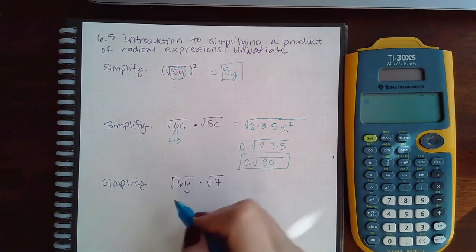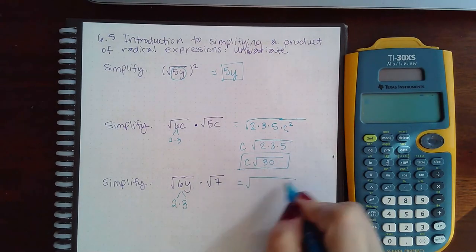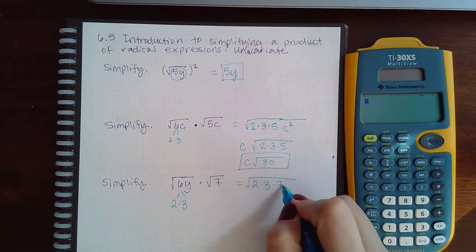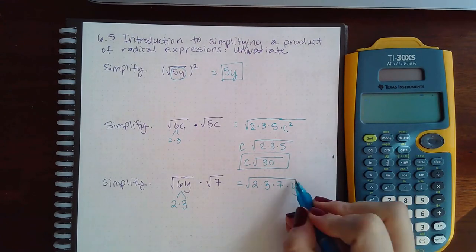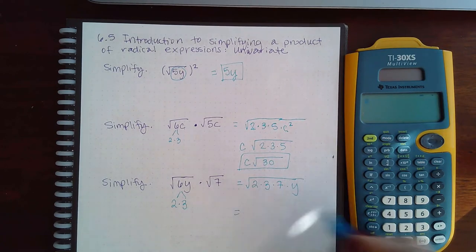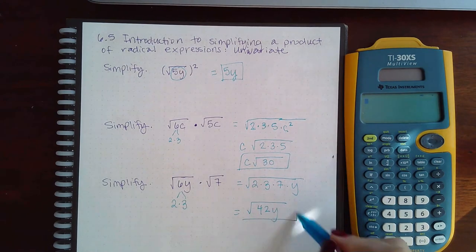Similarly with this one, this is 2 times 3. So when I multiply this together, I get that 2, that 3, the 7, and then the y. We list the numbers in front and then the variables at the back. But none of these have a pair, so all of it's just going to get multiplied together anyway. And you end up with square root of 42y, and that's the final answer there.